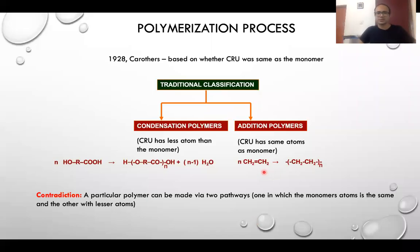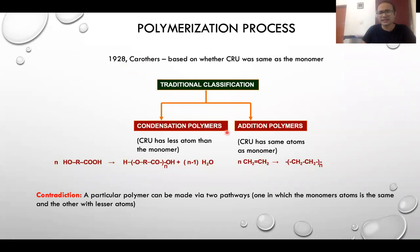Let us look into another form of classification of polymers, that is on the basis of the polymerization process. This was first given by Carothers in the year 1928, where he classified polymers into two types: condensation polymers and addition polymers. Condensation and addition are basically polymerization processes, and they differ in the way they form the polymer.